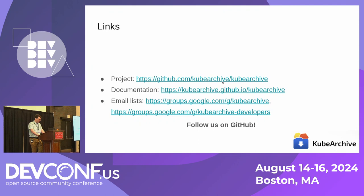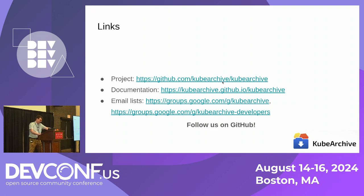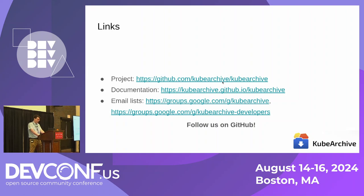Where can you learn more? We have a GitHub repo with all the work in progress. We also have documentation — it's a work in progress, but we have instructions and are actively working on it as we add features. We have the KubeArchive email list, which will notify you when new releases happen, and the KubeArchive developers email list for discussion. Give us a follow on GitHub and join the developers email list if you're interested.